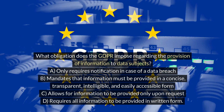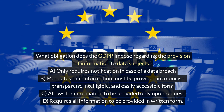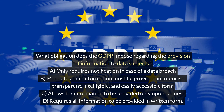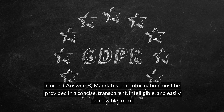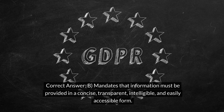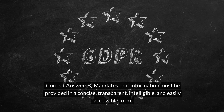What obligation does the GDPR impose regarding the provision of information to data subjects? A. Only requires notification in case of a data breach. B. Mandates that information must be provided in a concise, transparent, intelligible, and easily accessible form. C. Allows for information to be provided only upon request. D. Requires all information to be provided in written form. Correct answer: B. Mandates that information must be provided in a concise, transparent, intelligible, and easily accessible form.